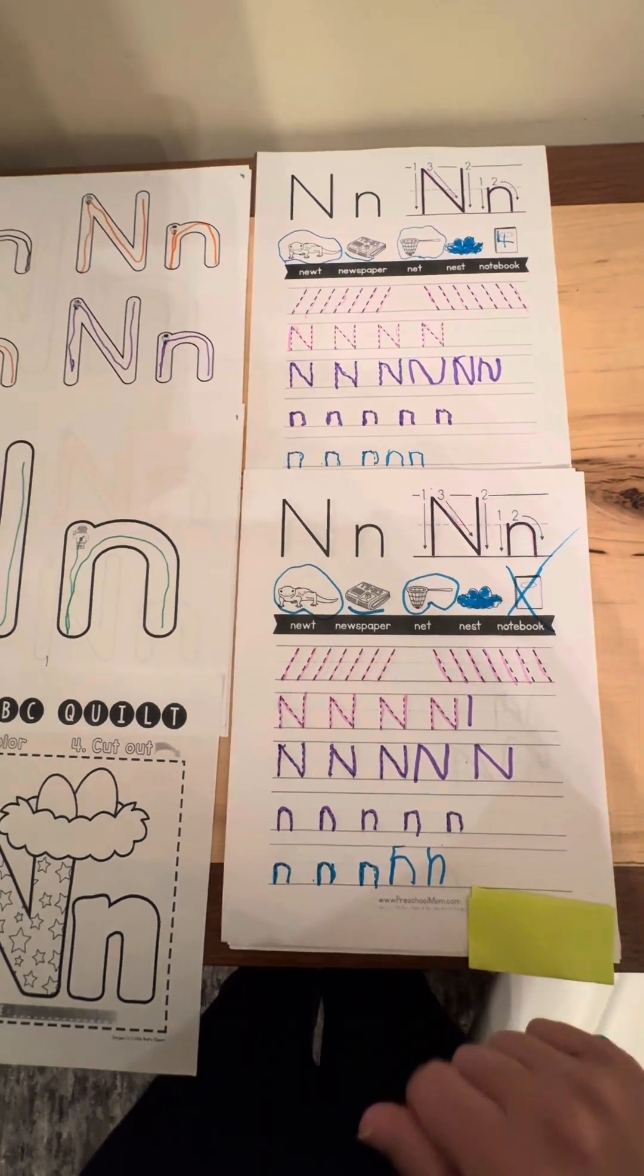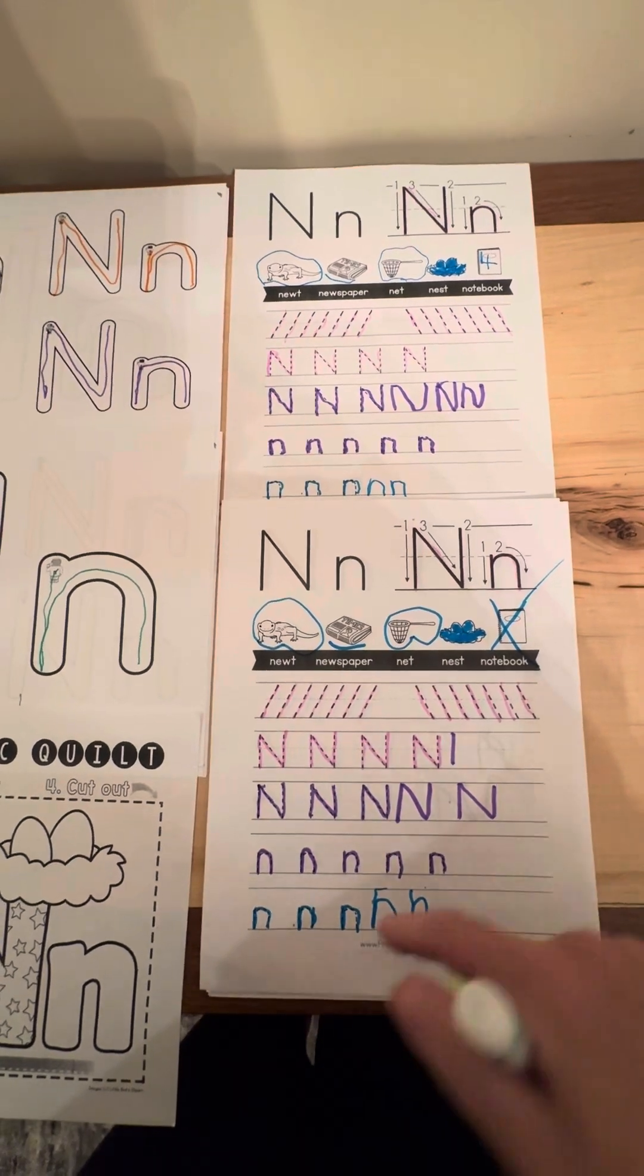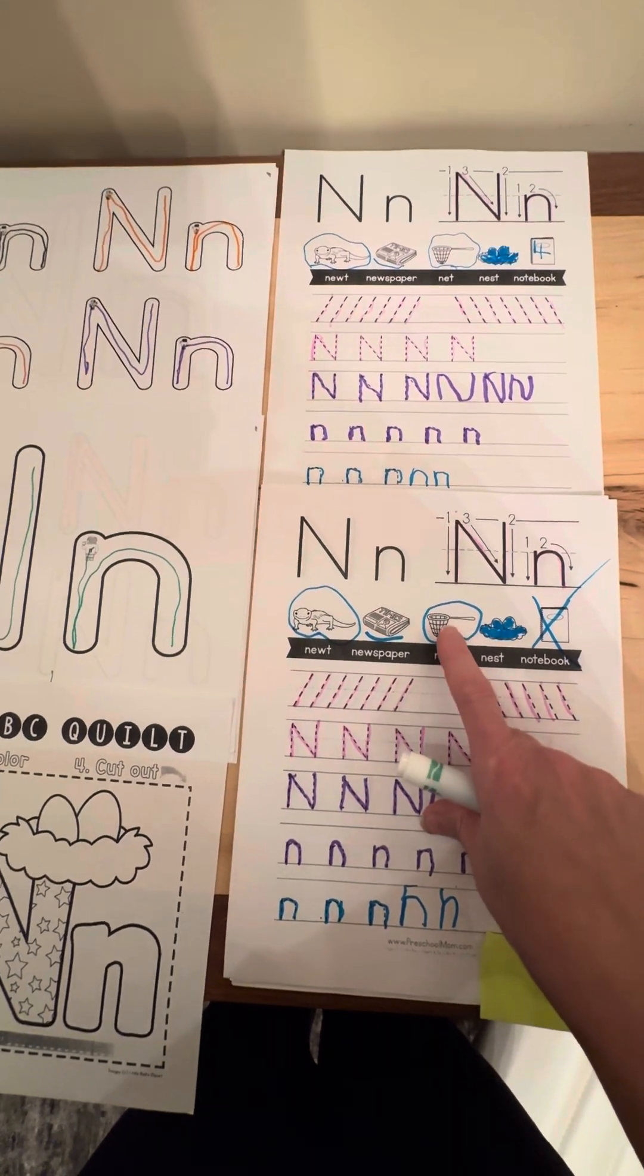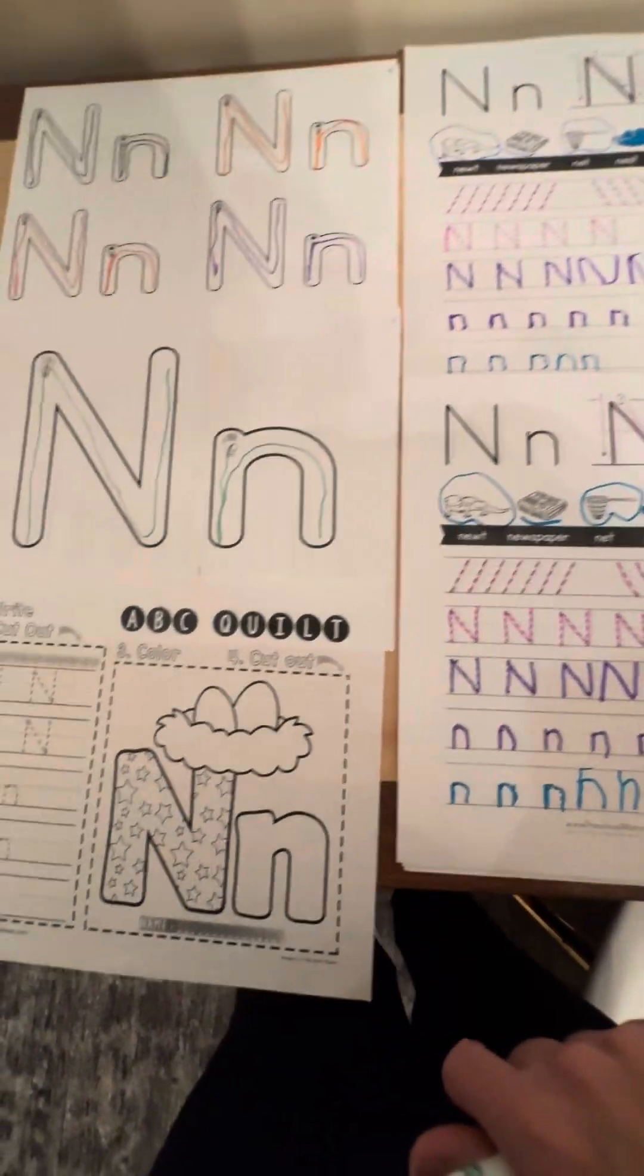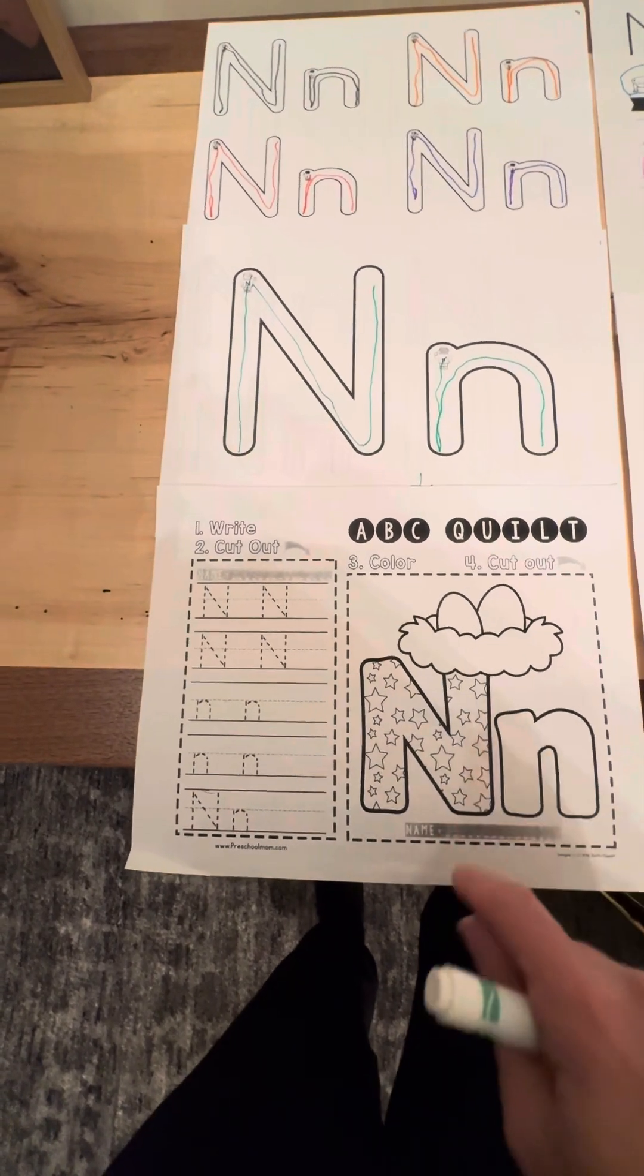And then we were using clues about the pictures and giving them specific directions: put an X on something you can write in, circle something you can catch a bug in, and different things like that. So this week you'll start seeing these come home. They can use these at home. They don't need to come back to us.